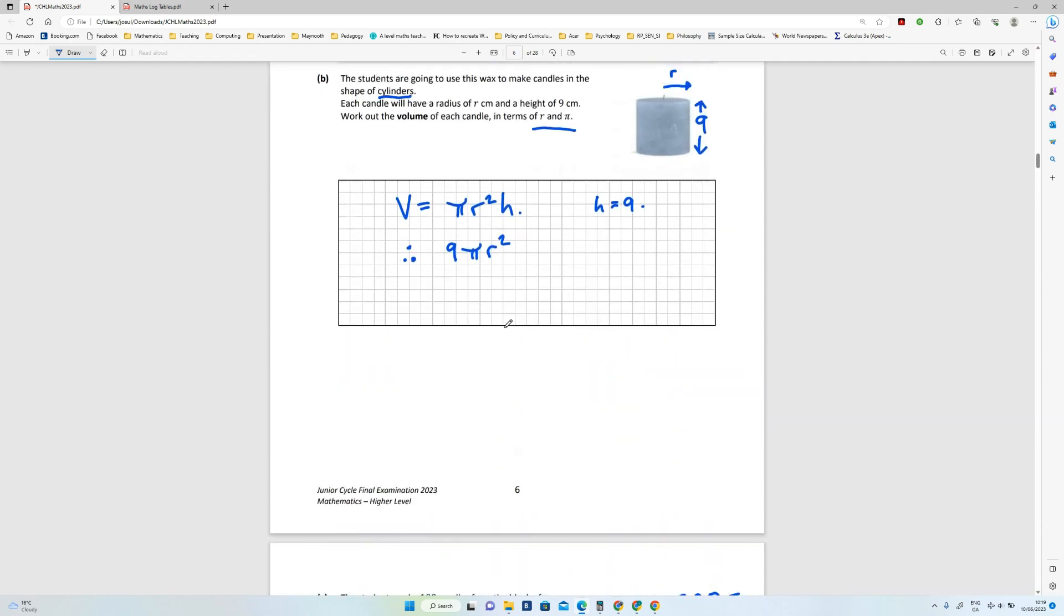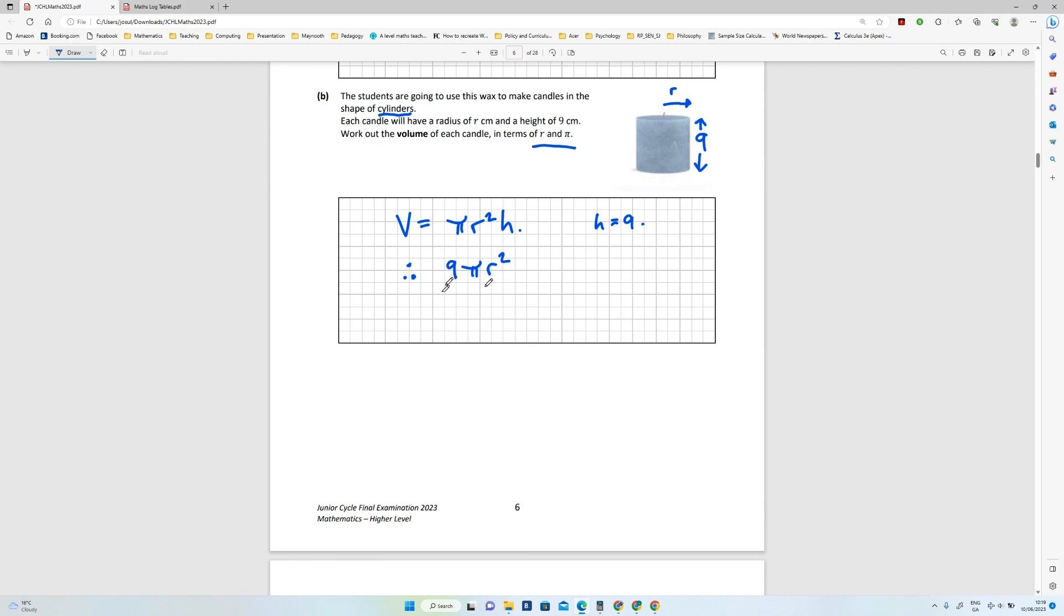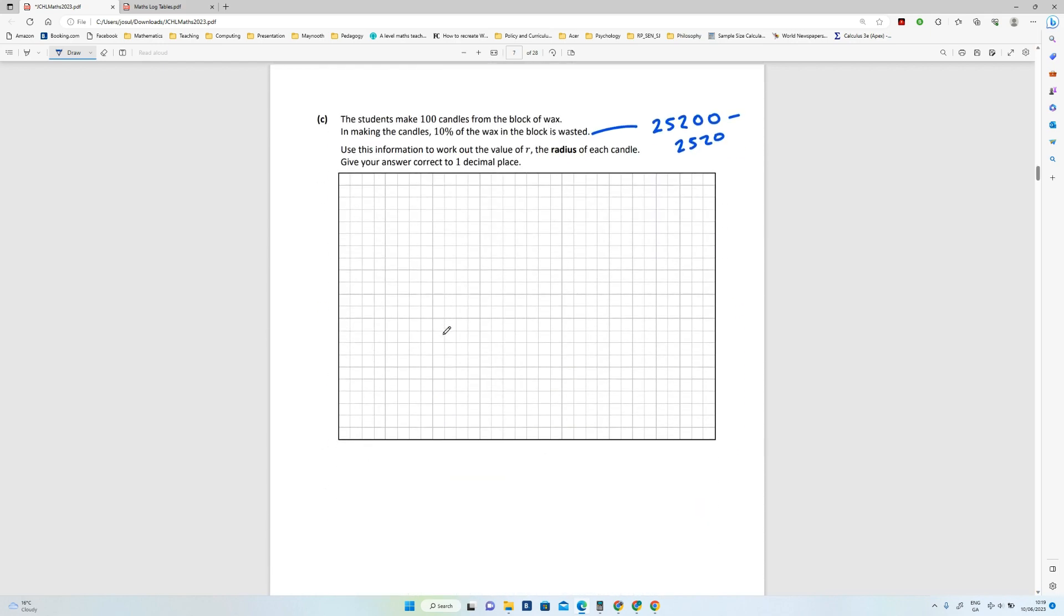Okay, now this formula here is the volume of each candle, so I'm gonna have a formula here, 100 times 9πr². So that's what I'm working towards. So let's work that out, 25200, so that's 90%... so 22680.